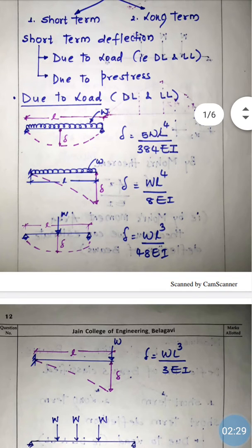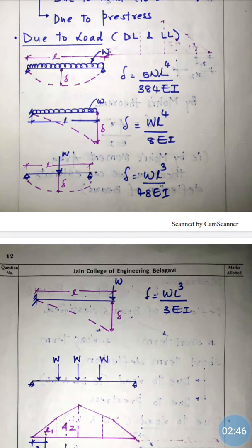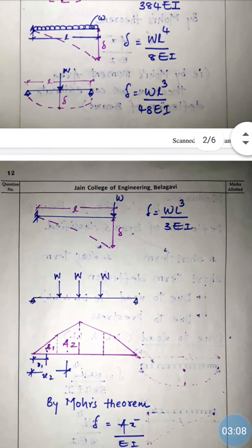Next, for a cantilever beam — one end fixed, one end free — loaded with uniformly distributed load, the deflection will be maximum at the free end: δ = WL⁴ / 8EI. For a simply supported beam with a point load at mid-span, the maximum deflection is at mid-span: δ = WL³ / 48EI. For a cantilever beam with a point load at the free end, maximum deflection at the free end is: δ = WL³ / 3EI.